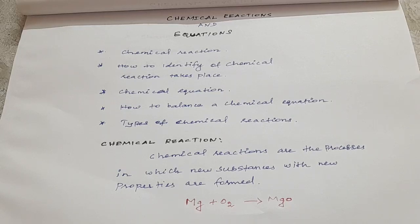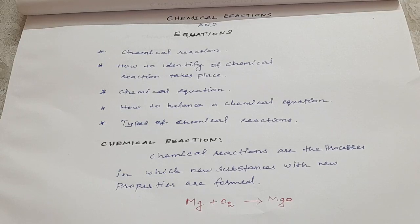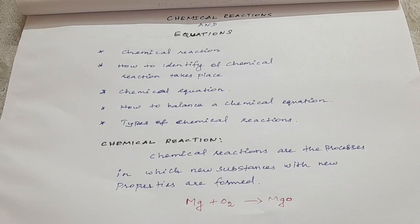First one is Chemical Reaction — what is meant by Chemical Reaction? The next one is how to identify whether a chemical reaction has taken place. Then the third one is Chemical Equation — what is meant by Chemical Equation, and what are the types of Chemical Equation?